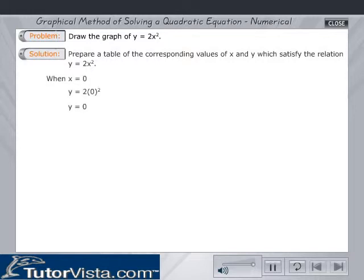When x is equal to 0, y is equal to 2 times 0 square, therefore y is equal to 0.